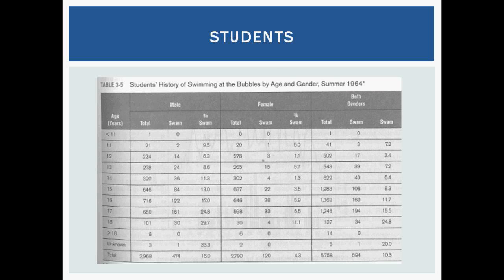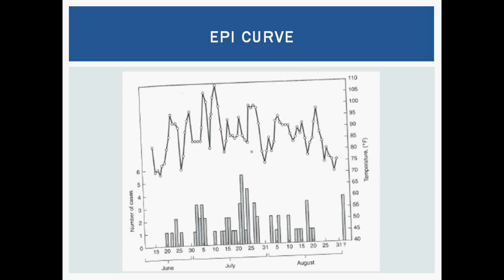Here's the epi curve for this outbreak. The top line shows temperature — they were trying to see if there was a correlation between high temperatures and students being more likely to go swimming. The epi curve shows a lot of ups and downs: there are exposures, then it ends, then more exposures, and it ends again. This is something that happened all summer long. If you go back to our second webinar, you can look at what type of epi curve this is. It could correlate a little with the higher temperatures, but again it's kind of sporadic overall, though there was some correlation there.